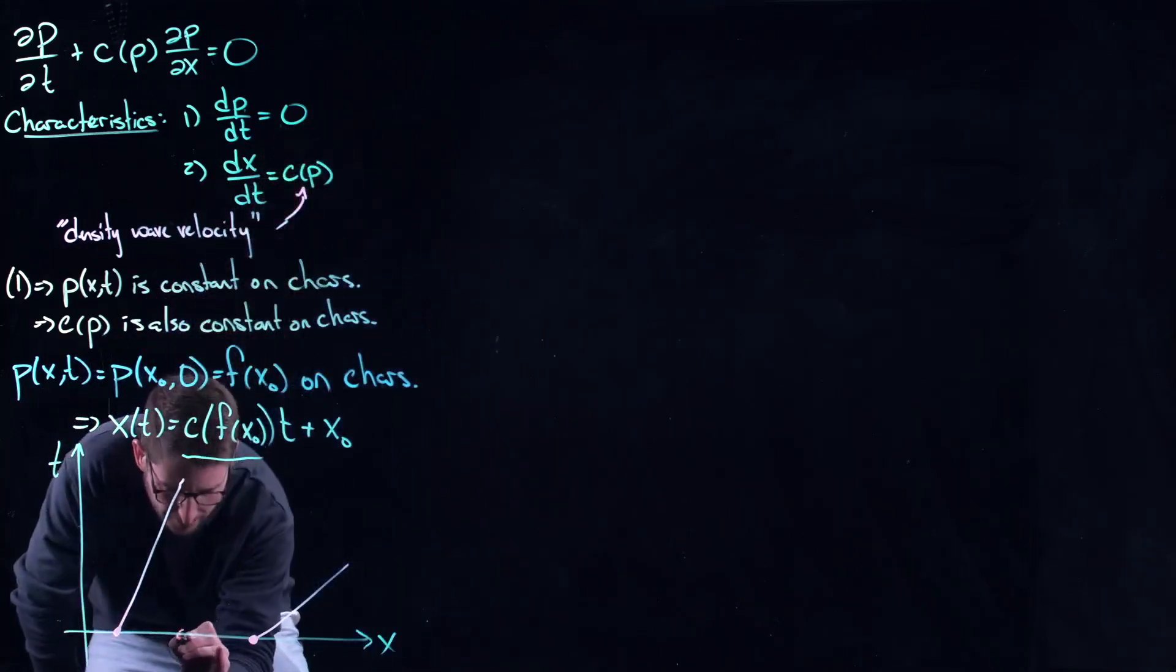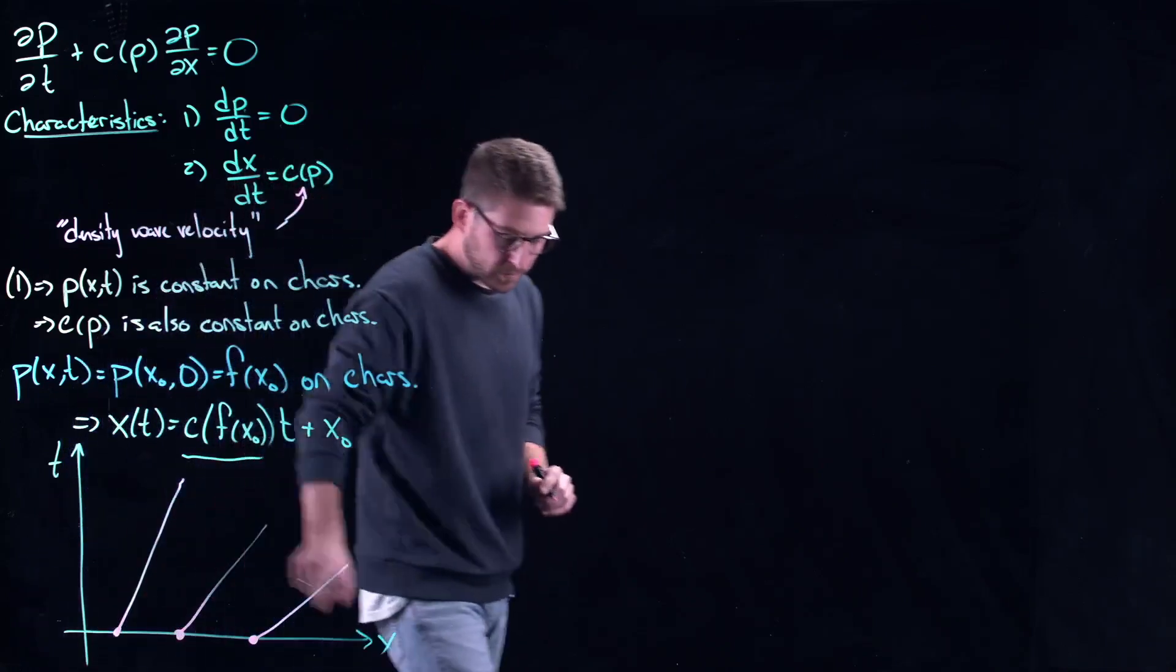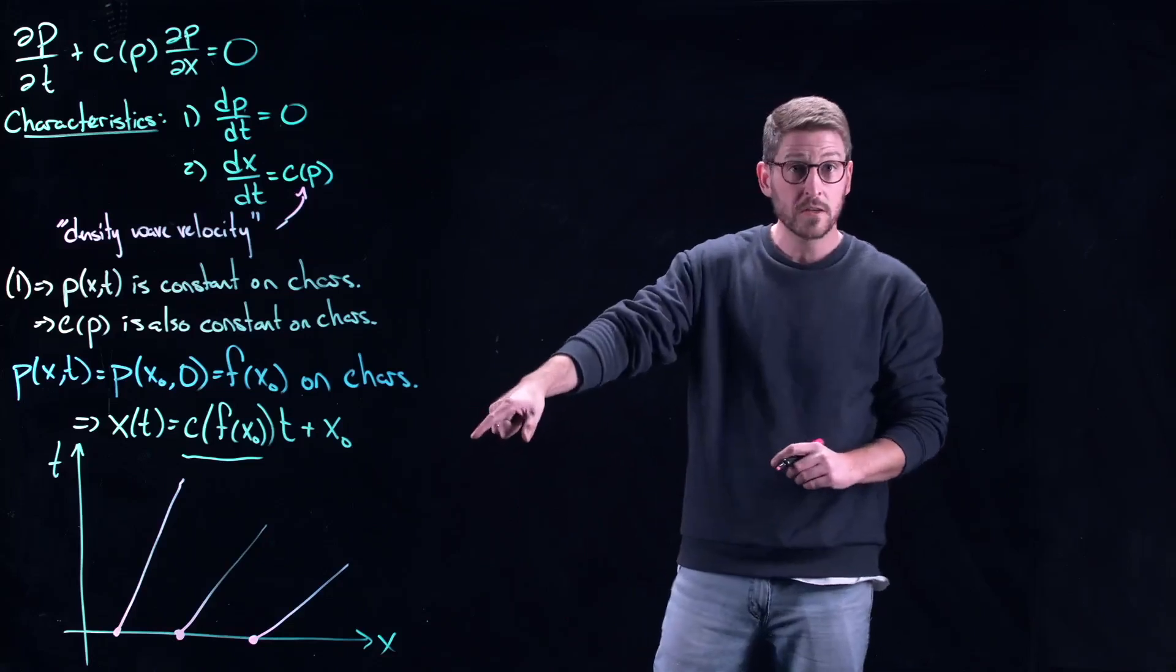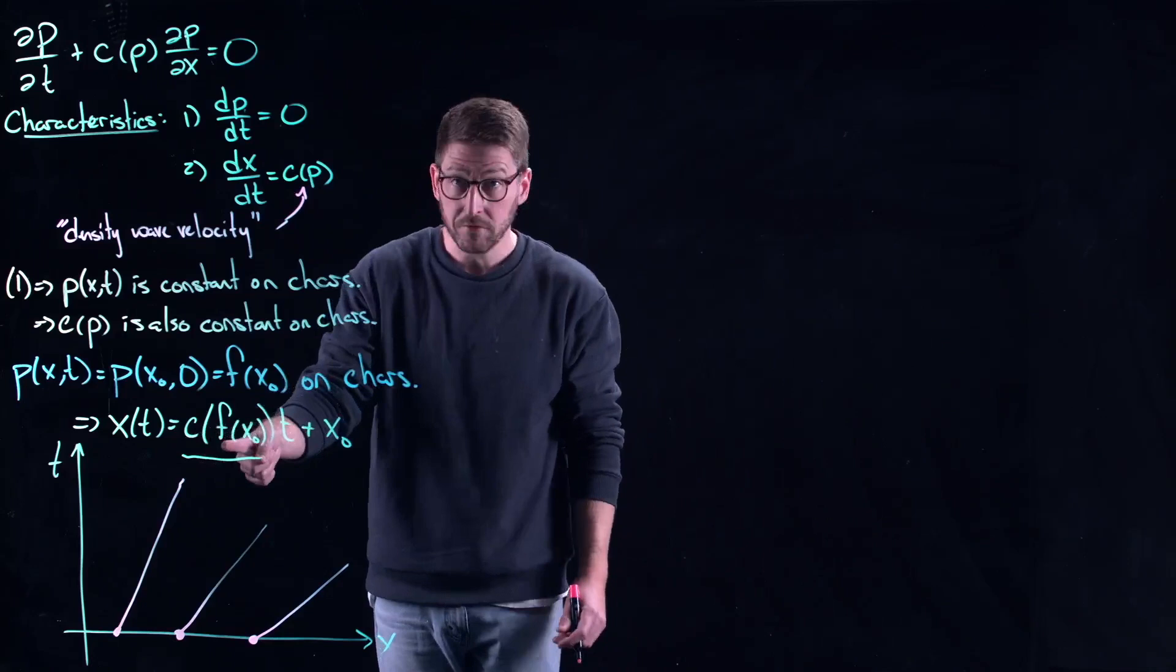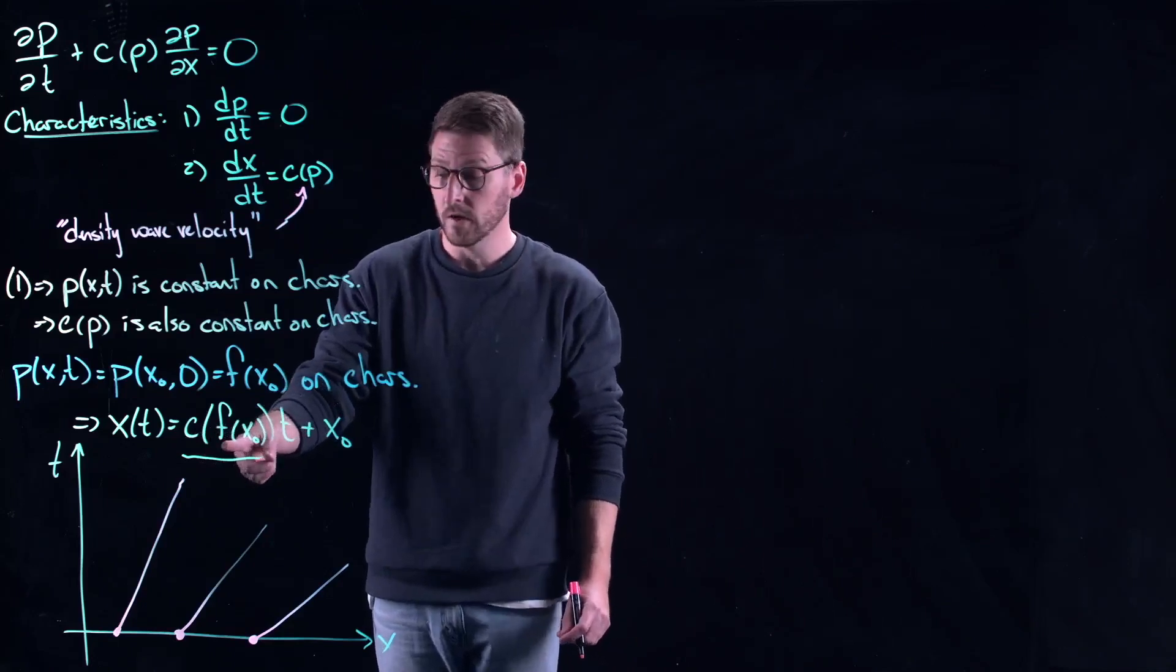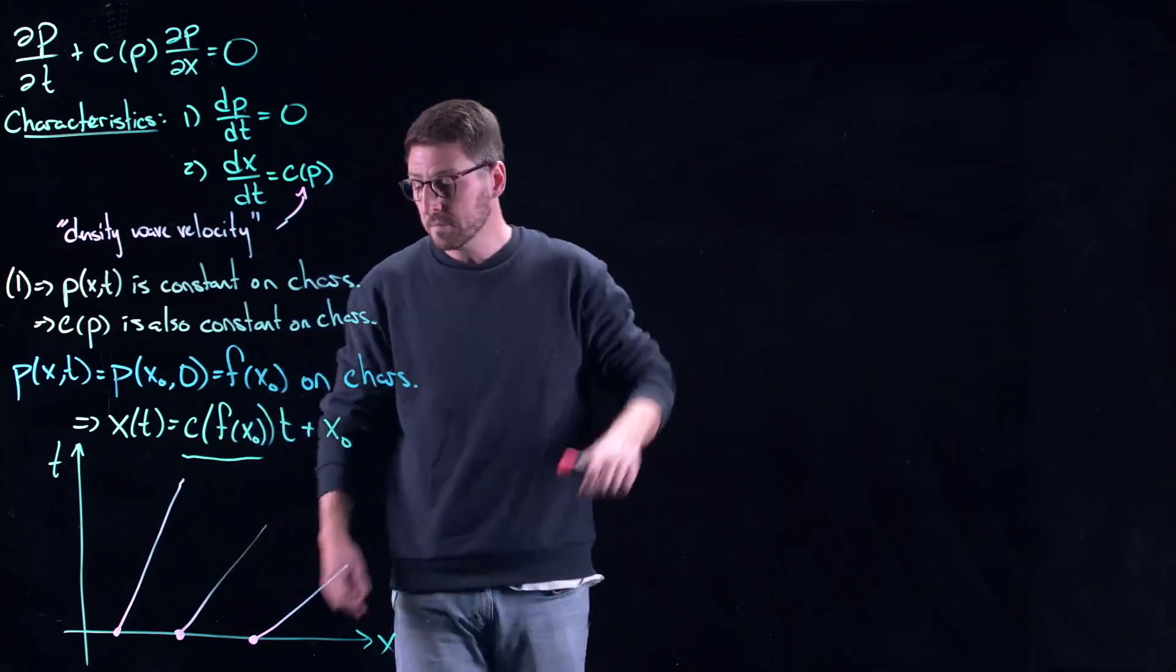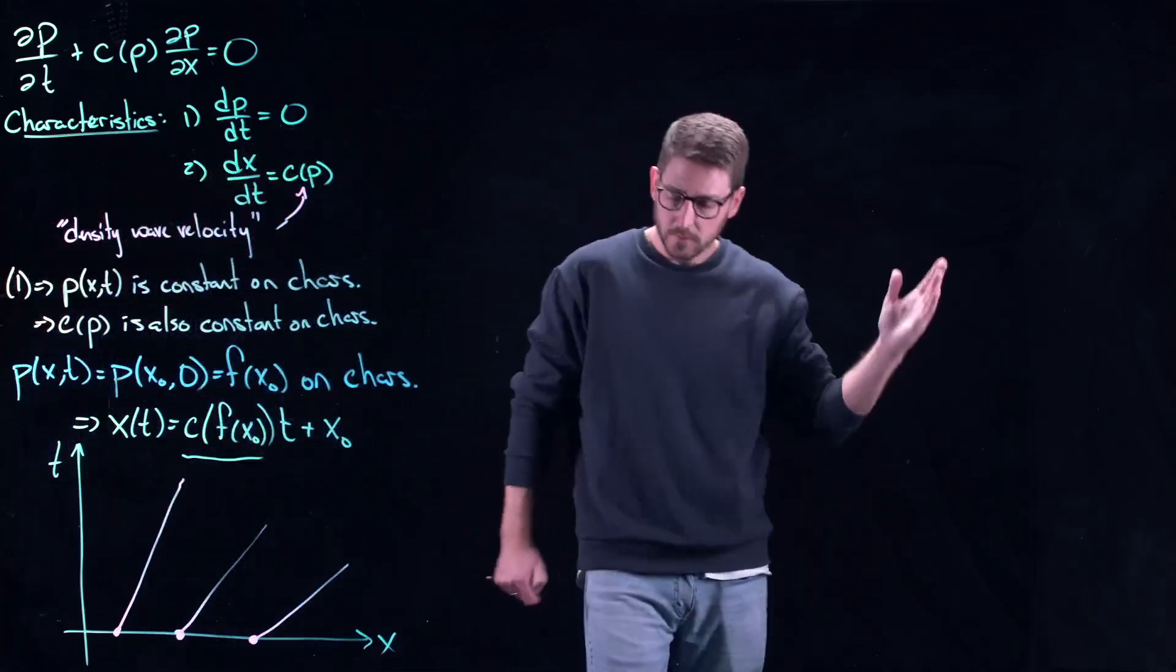So it's not just a bunch of parallel lines. It's a bunch of characteristic curves or lines that each have potentially a different slope. c could be a continuous function or doesn't have to be. We've worked with discontinuous initial conditions before. These don't even have to be varying continuously, these slopes.